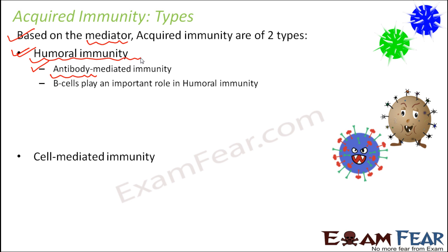B cells play a very important role in the process of humoral immunity. The second type is cell-mediated immunity. This type of immunity is mediated by the T cells. It is often abbreviated as CMI — cell-mediated immunity. The T cells do not produce antibodies themselves, but they can recognize antigens which are present on the surface of infected cells.